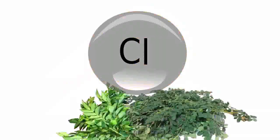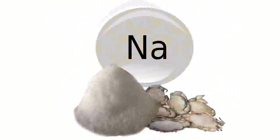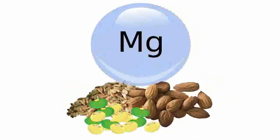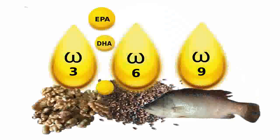Sulfur, chlorine and protein or essential amino acids are type 2 nutrients. Sodium, potassium, magnesium, phosphorus and zinc also belong to the same group. Essential fatty acids like omega-3 are type 2 nutrients as well.